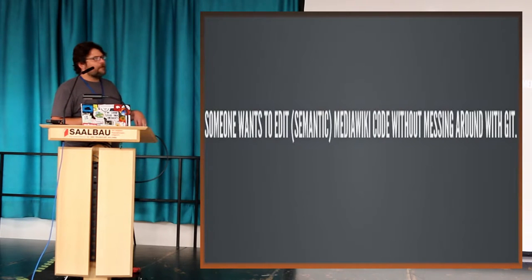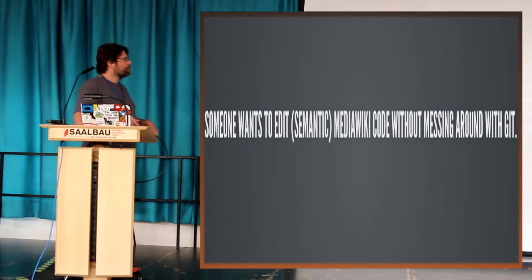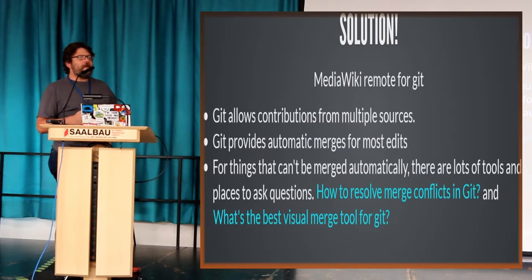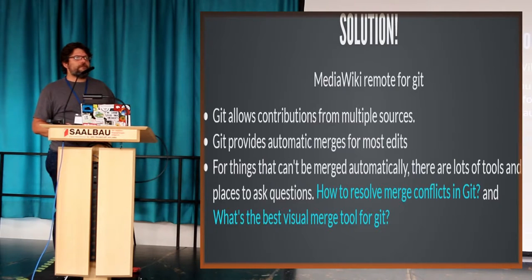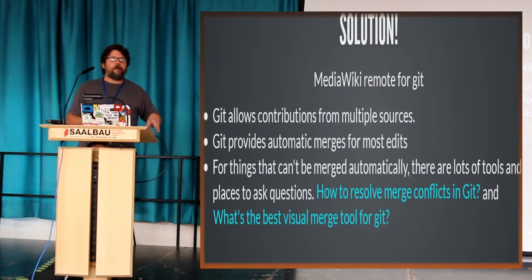As a last example, let's say someone wants to edit PHP code on a wiki — I have a demonstration of this. The solution to all of these is a MediaWiki remote for Git. This is something that was written, or at least started, around 2012, maybe 2010, by a group of students. It's in the contrib directory of Git core itself.